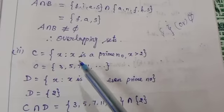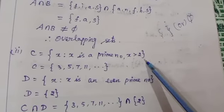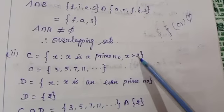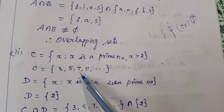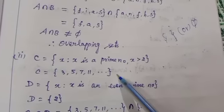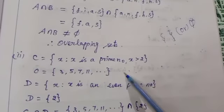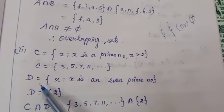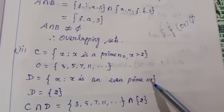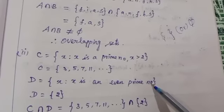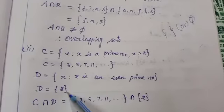Second question: C is equal to set of all X such that X is a prime number and X greater than 2. We select prime numbers more than 2: 3, 5, 7, 11, etc. Then D is equal to set of all X such that X is an even prime number. Among prime numbers, we have only one even prime number, that is 2.